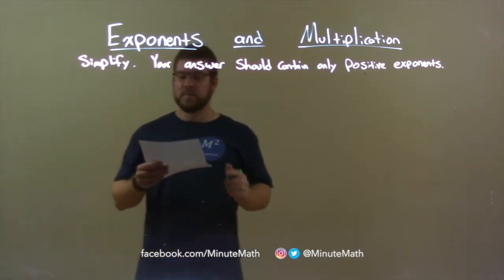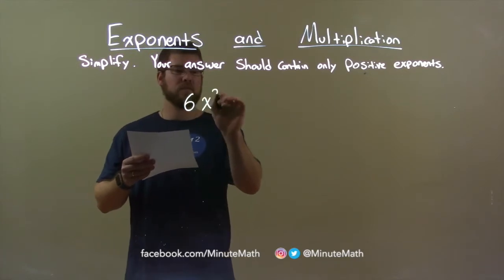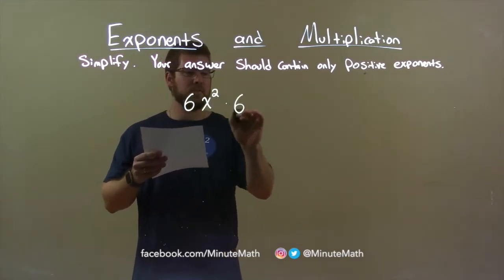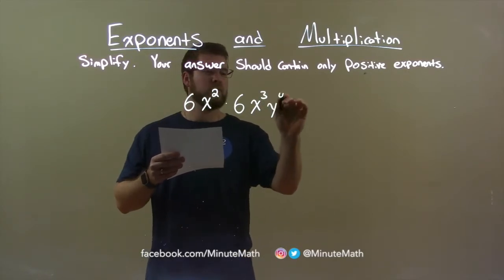So, if I was given this problem, 6x squared times 6, x to the third power, y to the fourth power.